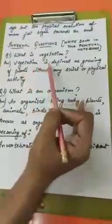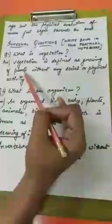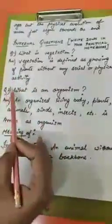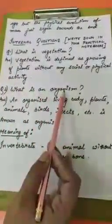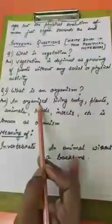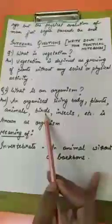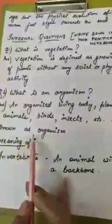Some internal questions — write these down in your practical notebooks. Question 1: What is vegetation? Vegetation is defined as the growing of plants without any social or physical activity. Question 2: What is an organism? An organized living body — plants, animals, birds, insects, etc. — is known as an organism.